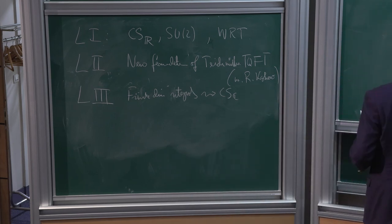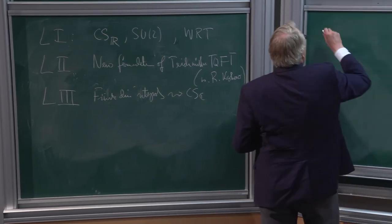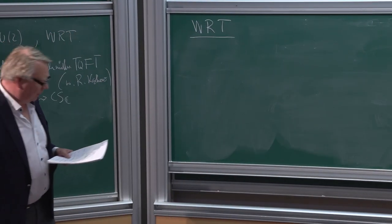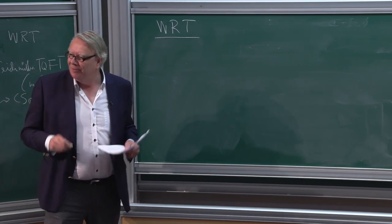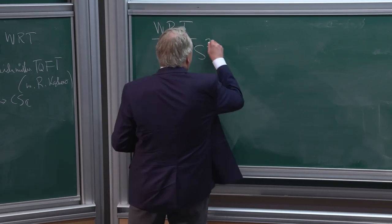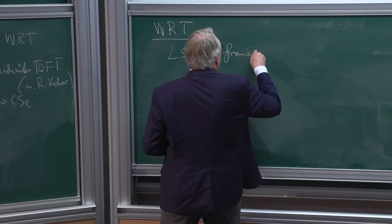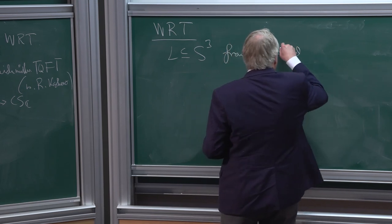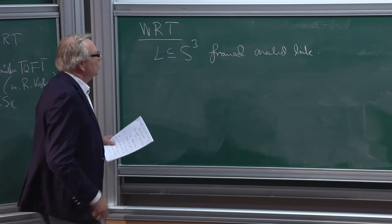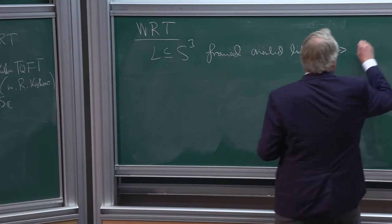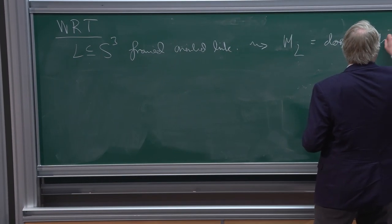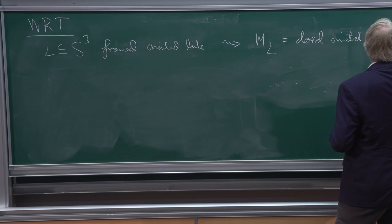So let me try to do the Witten-Reshetikhin-Turaev quantum invariants of three-manifolds. Three-manifolds will be all over the place. I'm going to choose a link inside S³ — this is a framed oriented link — and from this I can do surgery, and I get M³, a closed oriented three-manifold.